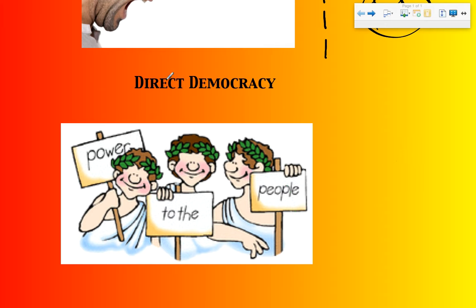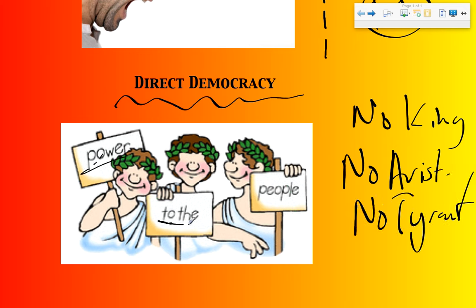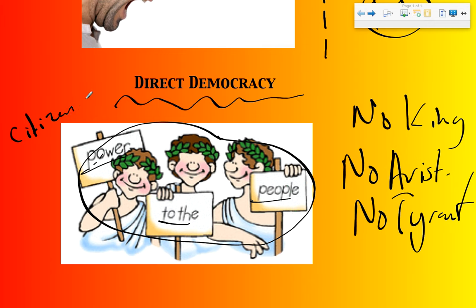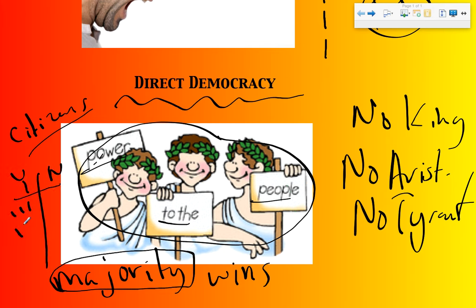The last main form of government used throughout ancient Greece is a great Greek achievement: direct democracy. No king, no aristocrat, no tyrant — it's all about power to the people. The people, which should really be defined as citizens of ancient Greece — Athens in particular — get to vote, and whoever gets the most votes wins. That's called majority rules, or majority wins. For example, if 10 people vote and 6 vote yes and 4 vote no, the majority is yes, so the yes side of that issue would have won.